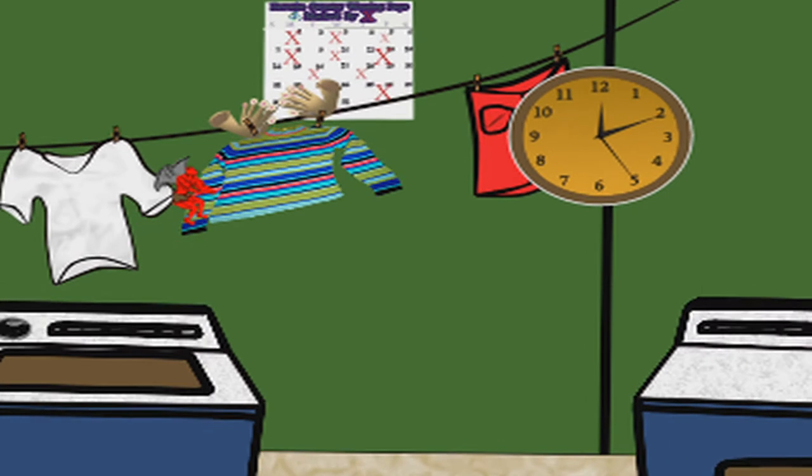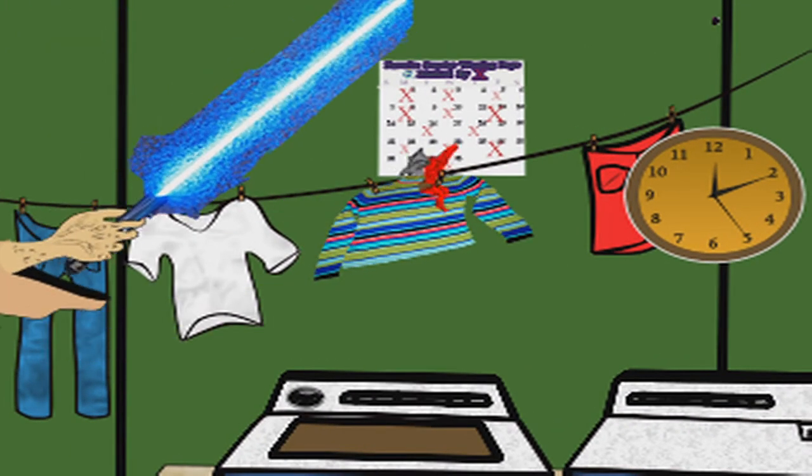Step 6. Allow it to air dry. Next time you wash it, keep it out of the dryer.